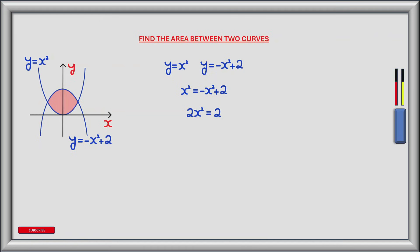Adding x squared to both sides of the equation gives 2x squared is equal to 2. Dividing both sides by 2 gives x squared is equal to 1. It follows that x is equal to plus or minus the square root of 1, and therefore x is equal to plus or minus 1.